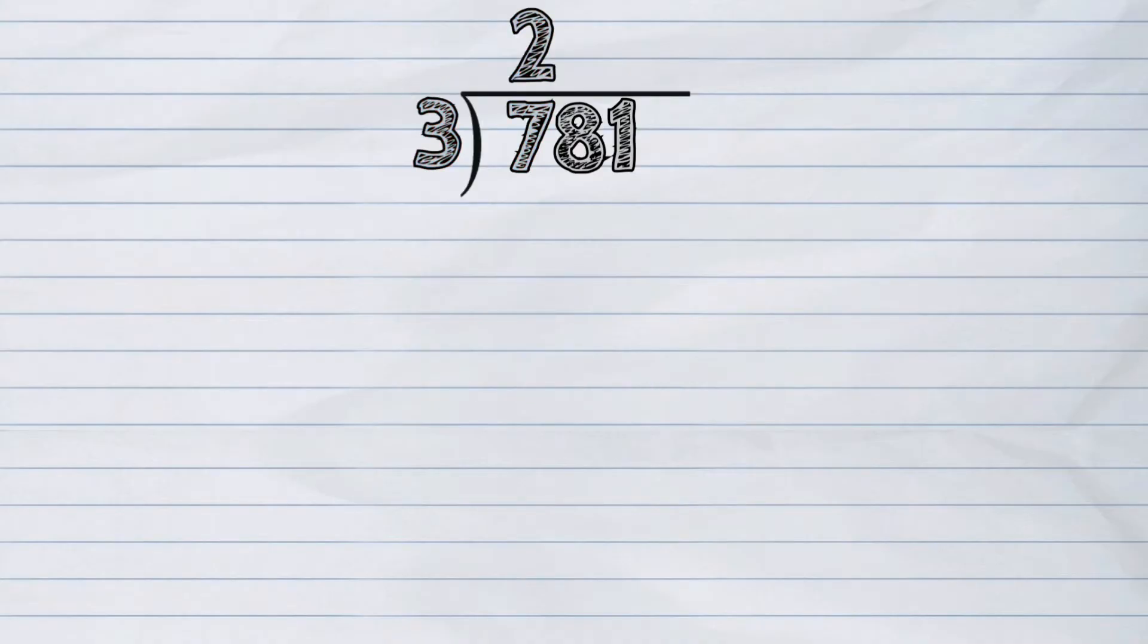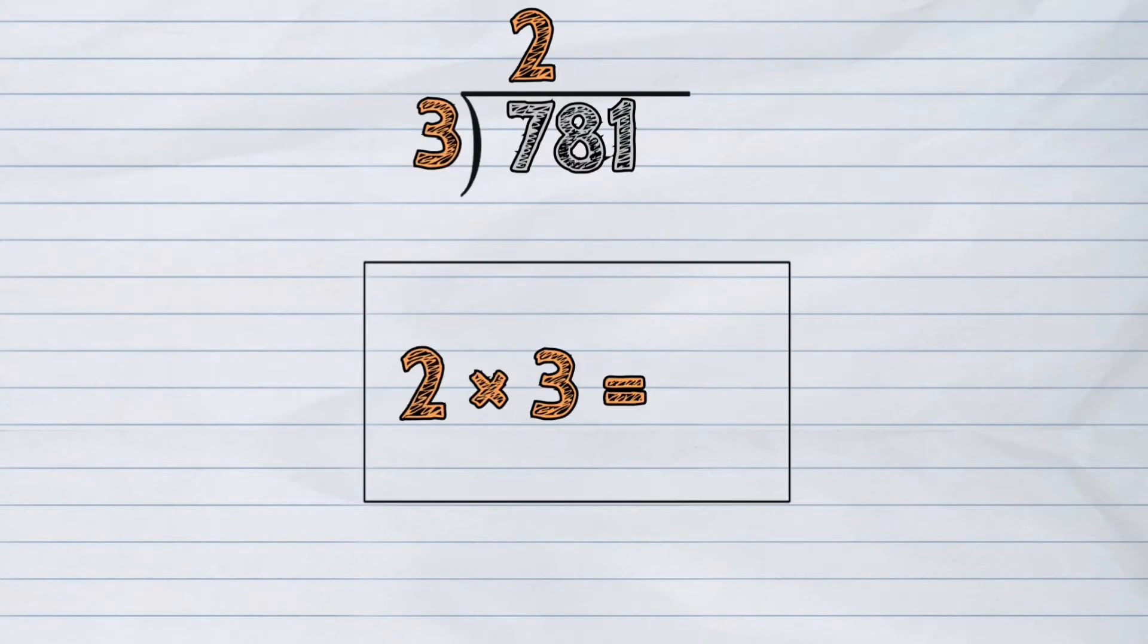The second step is to multiply. We will multiply our answer from step 1, which is 2, and our divisor, which is 3. 2 times 3, the answer is 6. We write 6 under digit 7.